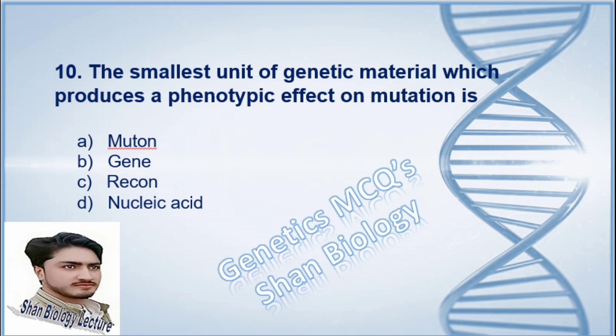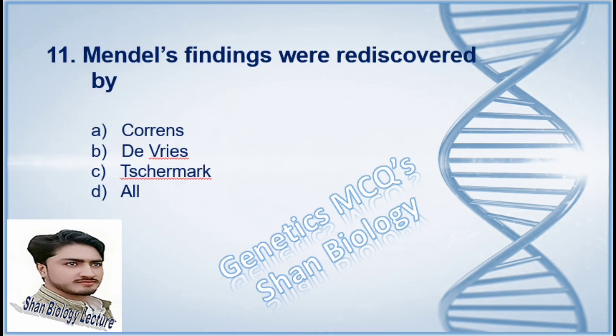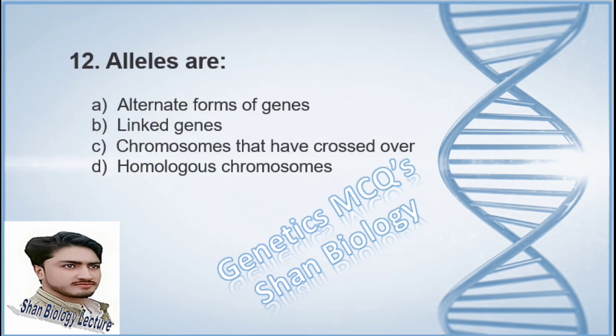Question 10: The smallest unit of genetic material which produces a phenotypic effect on mutation is — option A mutant, option B gene, option C recon, option D nucleic acid. The correct option is A, mutant. Question 11: Mendel's findings were rediscovered by — option A Correns, option B de Vries, option C Tschermak, option D all. The correct option is D, all.